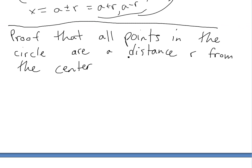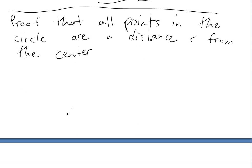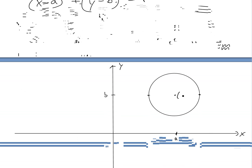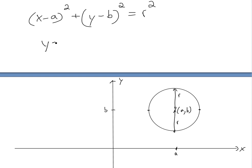I'll show a proof that all points on the circle are distance r from the center. We already proved the extreme outer regions are distance r. Now for a random point at coordinates (x, y), we draw a right angle triangle, calling the horizontal leg delta x and the vertical leg delta y, and the hypotenuse c. Using the Pythagorean theorem: delta y squared plus delta x squared equals c squared. Delta y equals y minus b, and delta x equals x minus a, so we get y minus b all squared plus x minus a squared equals c squared.